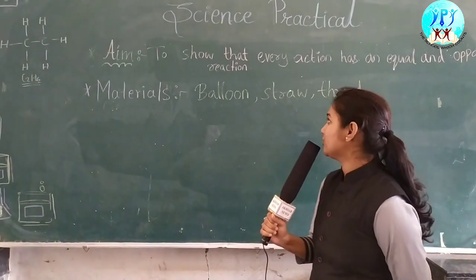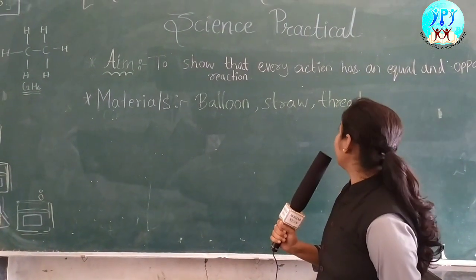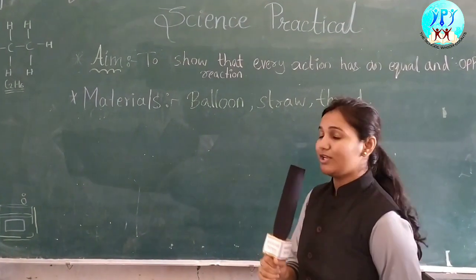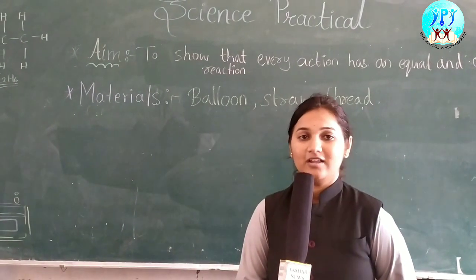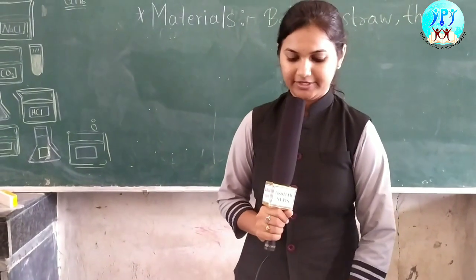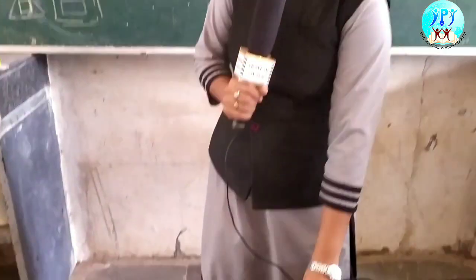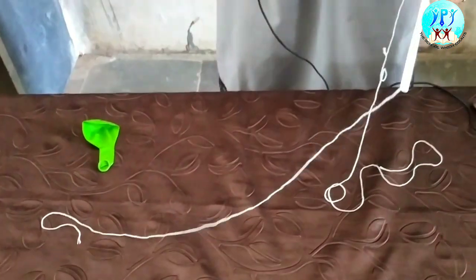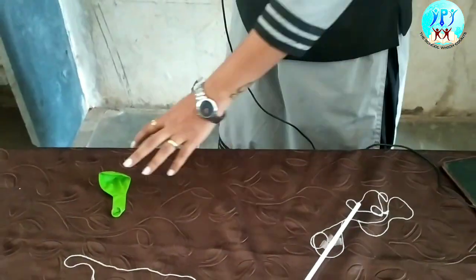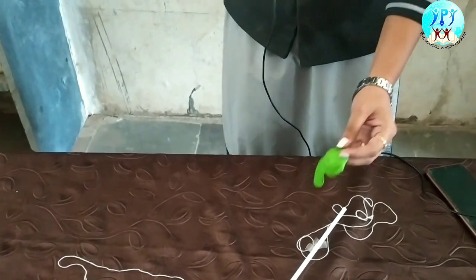The aim is to show that every action has an equal and opposite reaction. The requirements are one straw, thread, and a balloon.